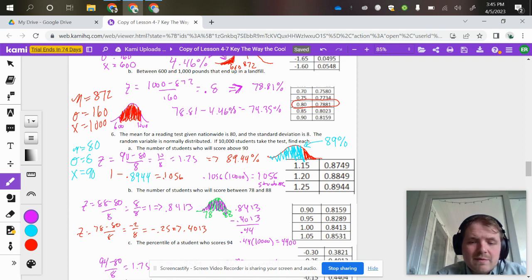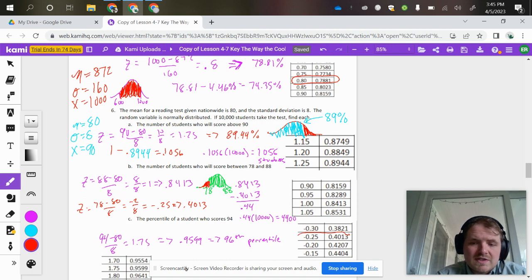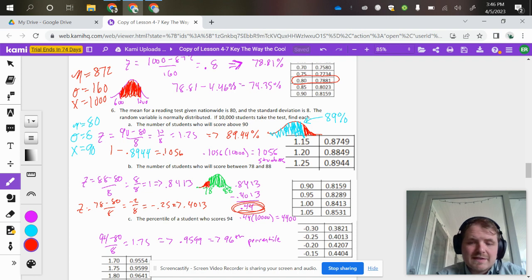But I want from 78 to 88, so I have to subtract off that little white part on the left side of 78. When I do the same calculation in red, I get a z-score of negative 0.25, which is this situation right here. I subtract that red from the 84%, giving me 0.44.